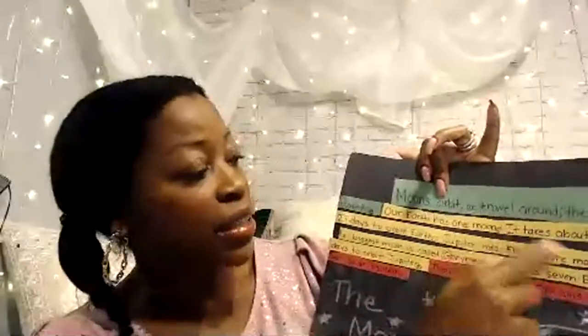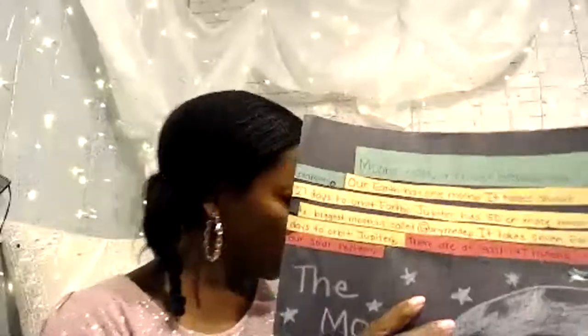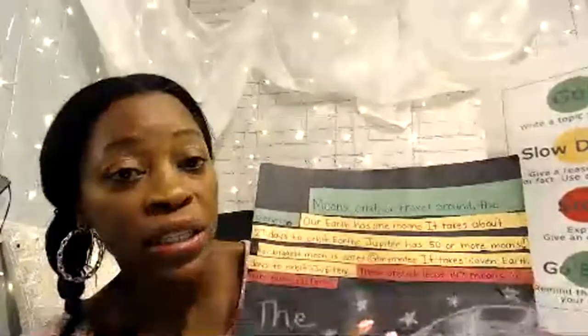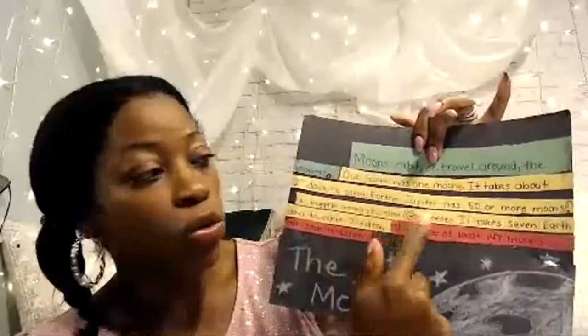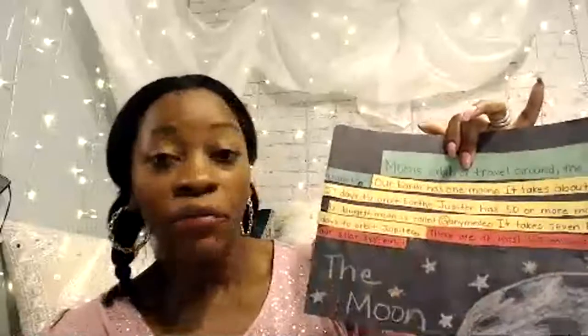We've slowed down to think about the details, and now we stop and give a little more detail. Supporting sentence one: 'Earth has one moon.' Then we give more detail — 'It takes about 27 days to orbit Earth.' We talk about Jupiter having more moons, then give the detail that moon's called Ganymede, and then add a bit more information. Within the yellow section where you're slowing down, you are giving a reason, detail, or fact.